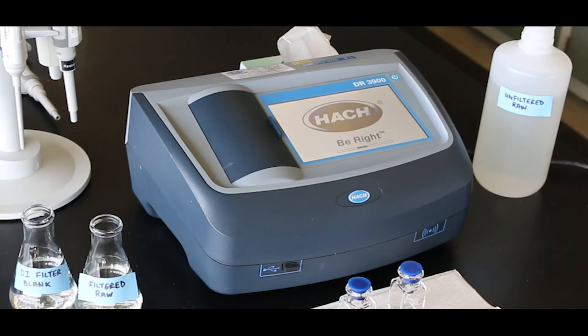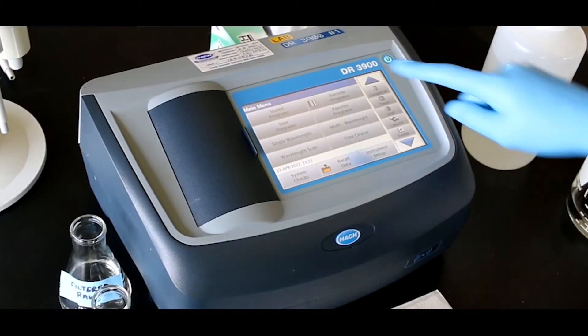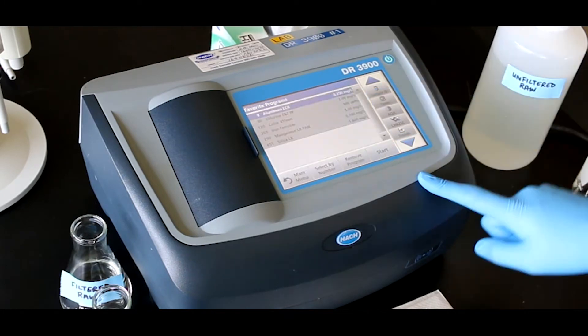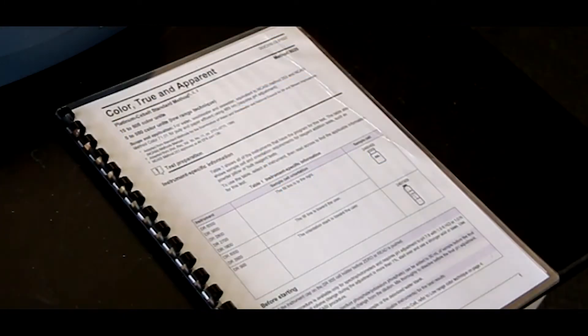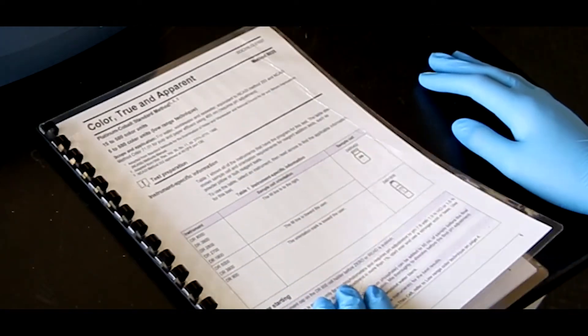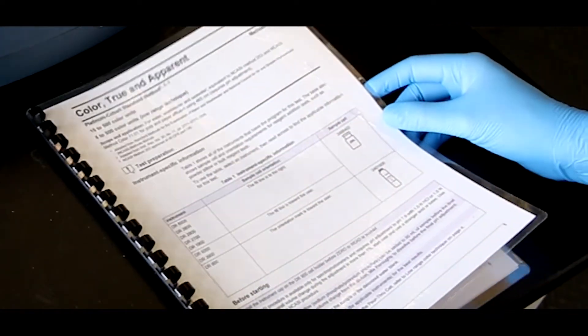We will be using a HAWC DR3900 spectrophotometer for our demonstration. Start the instrument and select the appropriate program. Information on sample cells, adapters and light shields can be found in the method.